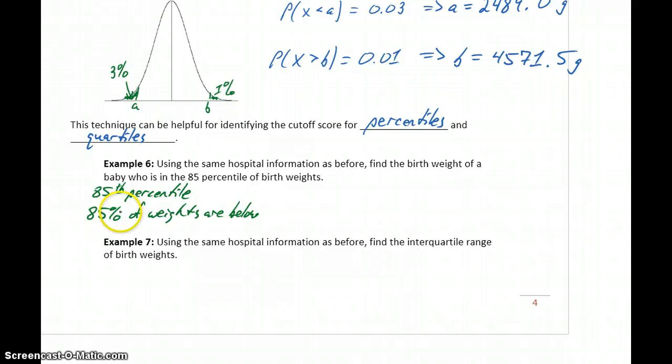If you're in the 50th percentile, 50% are below yours. So this means we would want to find the probability that x is less than A. So there's some cutoff that when x is less than that, our probability ends up being 85%. So 85% of values are less than this value A.